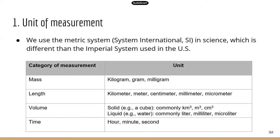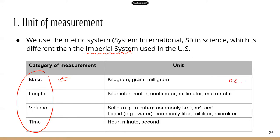We have different categories of measurement, and for each category we'll use a different unit. One thing you need to be careful about is that in the US we use the imperial system — for example, for measuring mass we use units such as ounce or pound. However, in the scientific world we do not use the imperial system; we use the metric system, and in fact most countries in the world use the metric system.